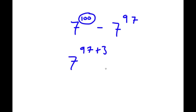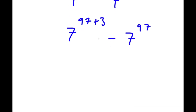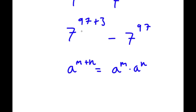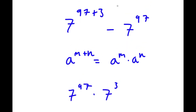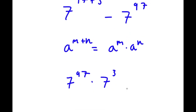So now I have 7 to the power of 97 plus 3, minus 7 to the power of 97. Using the property a to the power of m plus n equals a to the power of m times a to the power of n, we get 7 to the power of 97 times 7 to the power of 3, minus 7 to the power of 97.